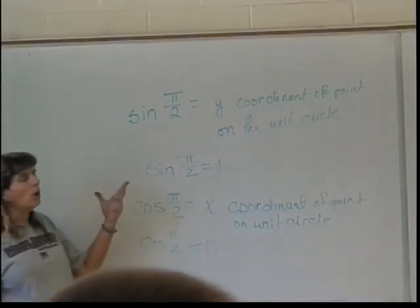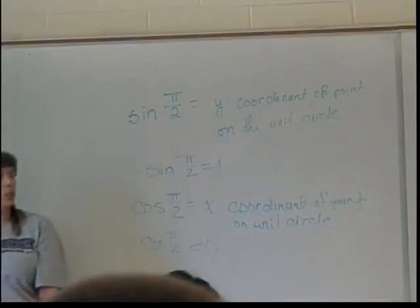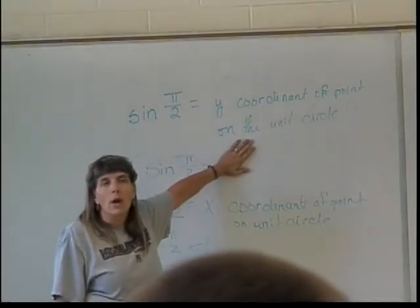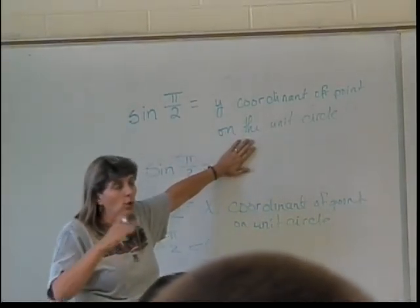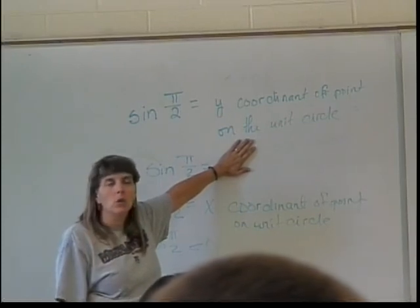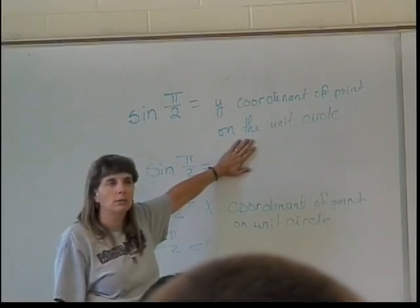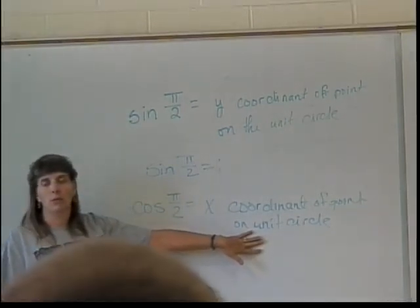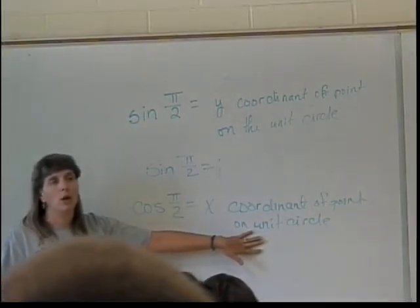Now, when we use our unit circle definitions, the y-coordinate of the point on the unit circle where the angle, the terminal side of the angle runs into the unit circle, is always going to be the sine of that angle. And the x-coordinate of the point where the terminal side of the angle runs into the unit circle is always going to be the cosine of that angle.